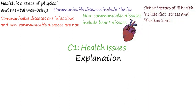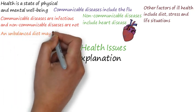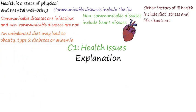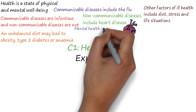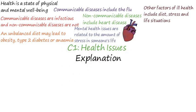Other factors of ill health include diet, stress, and life situations. Having an unbalanced diet may lead to obesity, type 2 diabetes, or anemia.